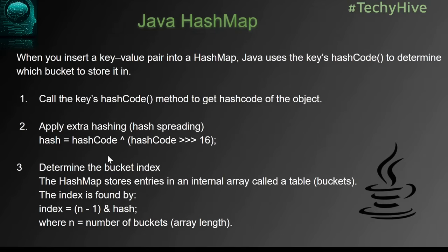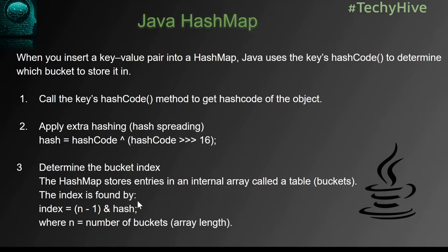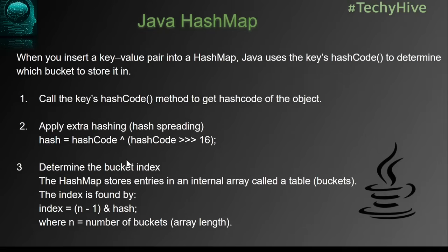Next, let's see how Java generates a unique hash value to minimize collisions in the HashMap. Here are the steps: first, it calls the key's hashCode method to get the hash code of the object. Next, it applies extra hashing — hash spreading — to minimize collisions and make the hash value more unique, using the formula: hash = hashCode with some bit spreading applied. Finally, it determines the bucket index. The HashMap stores entries in an internal array of buckets called a table, and the index is found by: index = (n - 1) & hash, where n is the number of buckets or the array length.